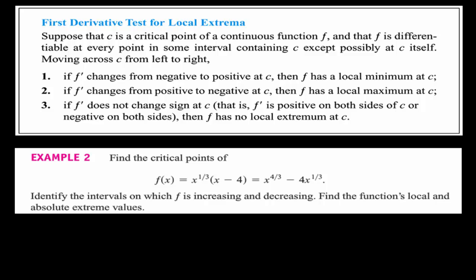Here's another example. Find the critical points of this function. We write it as x^(4/3) - 4x^(1/3), because distributing x^(1/3) into (x - 4) gives x^(4/3) — you just add the exponents — minus 4x^(1/3). Identify the intervals on which f is increasing and decreasing, then find the local and absolute max or min.